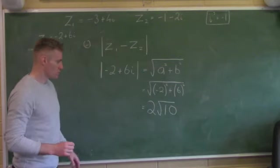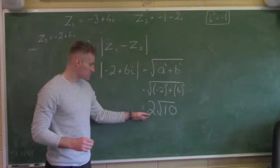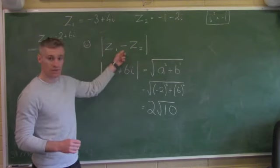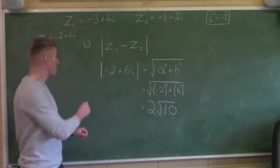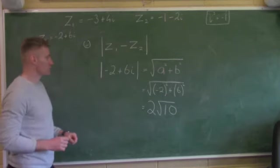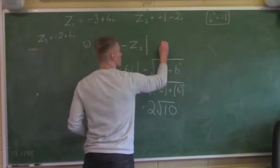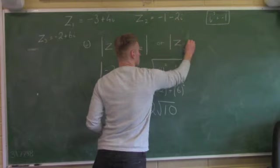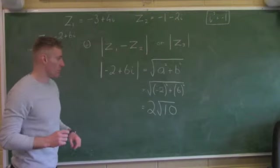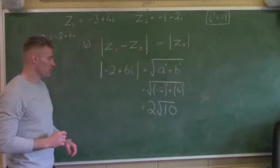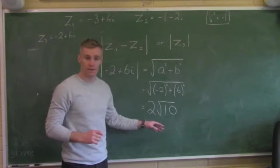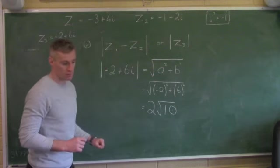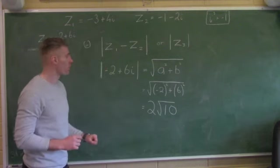We can calculate separately: minus 2 squared gives 4, plus 6 squared is 36. Or we can just put it all into our calculator, and it will simplify to 2 root 10. That is how far Z3 is from the origin. This is in surd form, so it's okay with full marks to leave it like that.